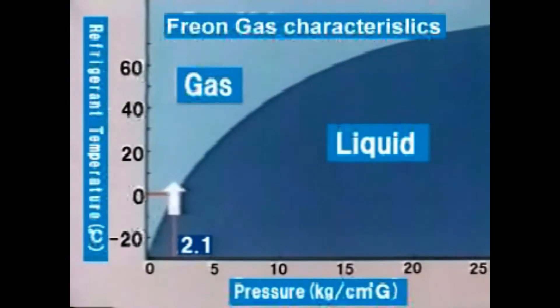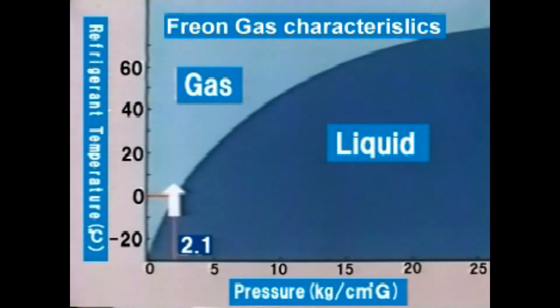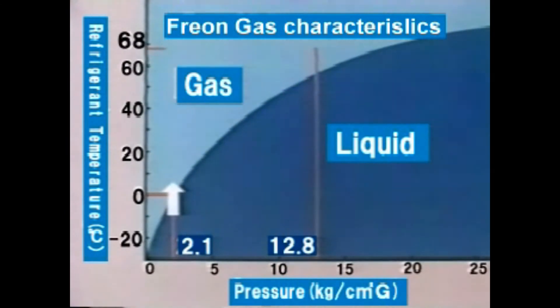Refrigerant expanded by valve now stays in the form of vapor at pressure 2.1 kilograms per square centimeter and zero degrees centigrade. It will be gasified when heat is taken by the evaporator. Meanwhile, the compressed refrigerant exists as a gas at a pressure of 12.8 kilograms per square centimeter, 68 degrees centigrade. When its heat is released by the condenser, it is liquefied.